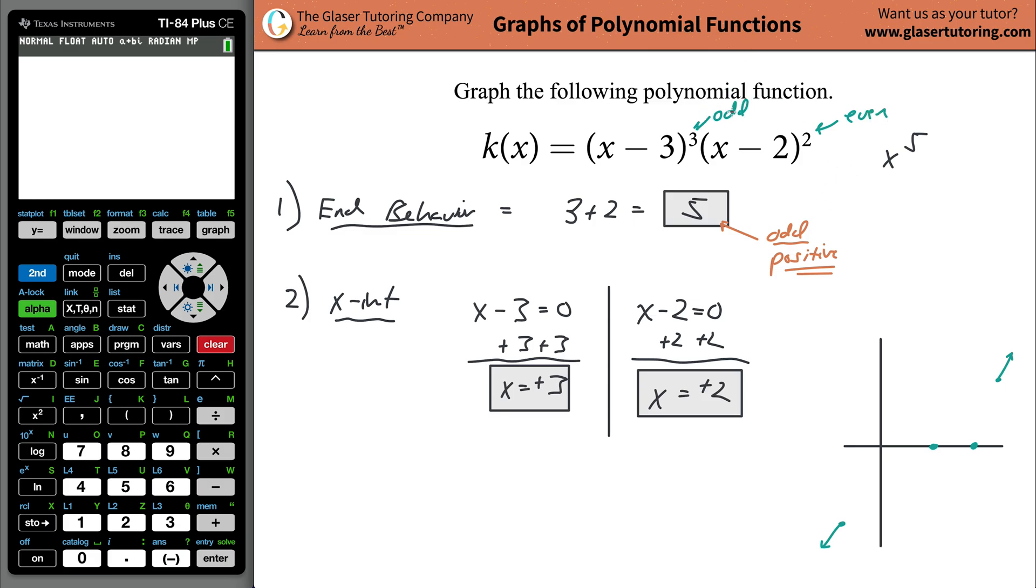The factor x minus three had an odd multiplicity, an odd power. And the x minus two factor had an even multiplicity. When you have odd multiplicities, they will cross the x-axis. When you have even multiplicities, they will bounce or bump.